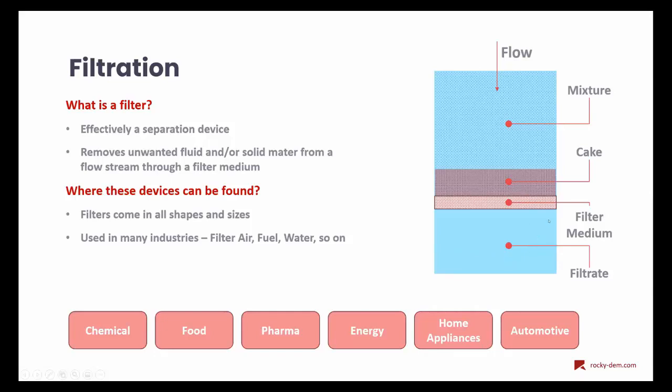These filters come in several different shapes and sizes, and they can be found in a lot of different industries, as you can see here: chemical, food, pharma, energy, home appliances, and also automotive, among others. The ones that people are most familiar with is the home appliances industry. You can find a filter in your vacuum cleaner, in your air conditioning system in your home. If you look at your car, you have a filter in the fuel system and also in the air system of your car. There is a lot of applications where we can have a filter.